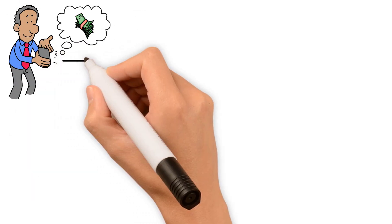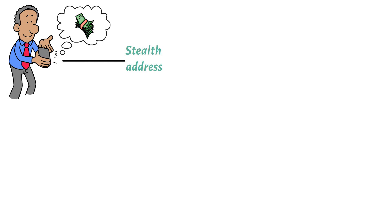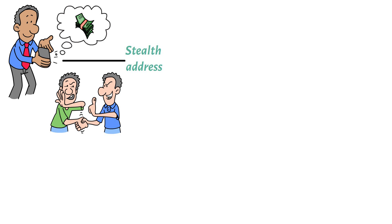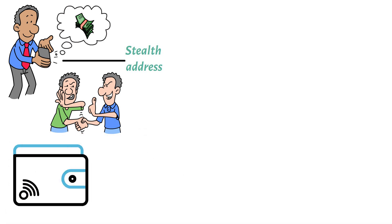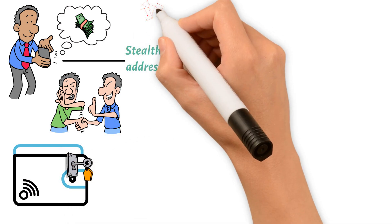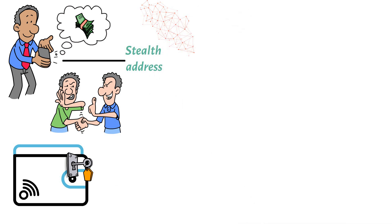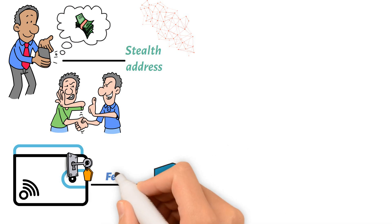A public address that truly receives payments is cryptographically connected to a stealth address. Nevertheless, only the sender and recipient are aware of this connection. The parties have a private expenditure key that is used to send payments and a private view key that shows incoming transactions. By employing anonymous Tor and I2P networks, transactions can be started, further enhancing the anonymity of transactions made through these networks.